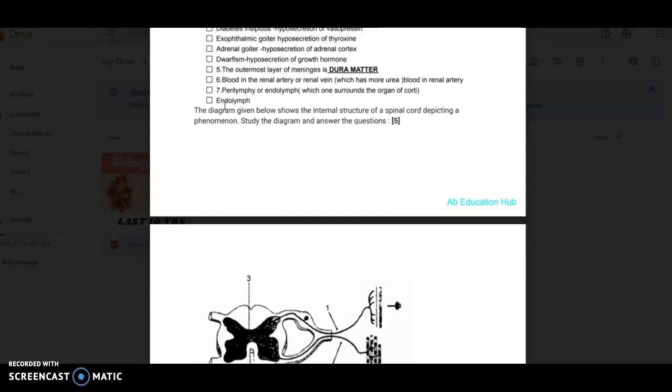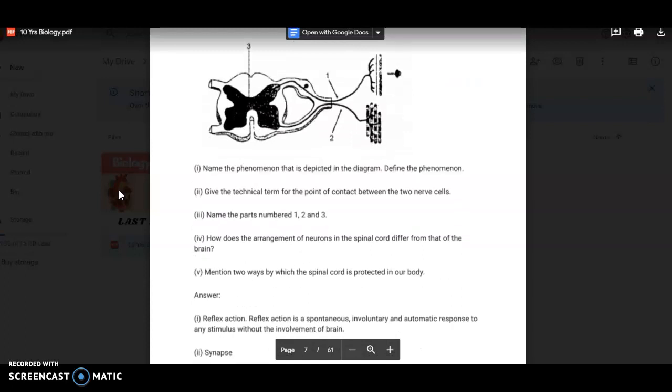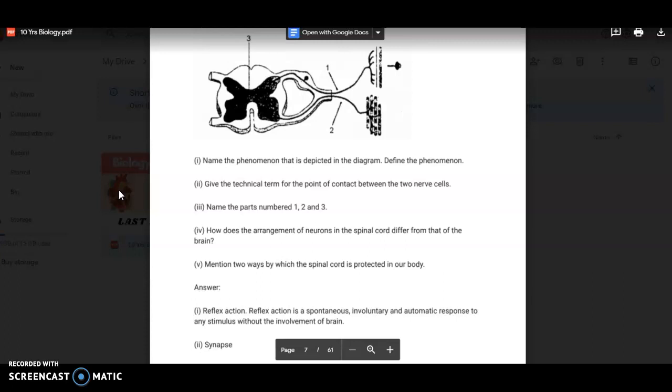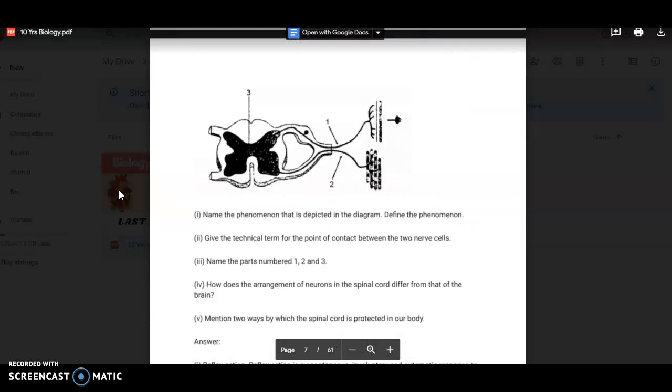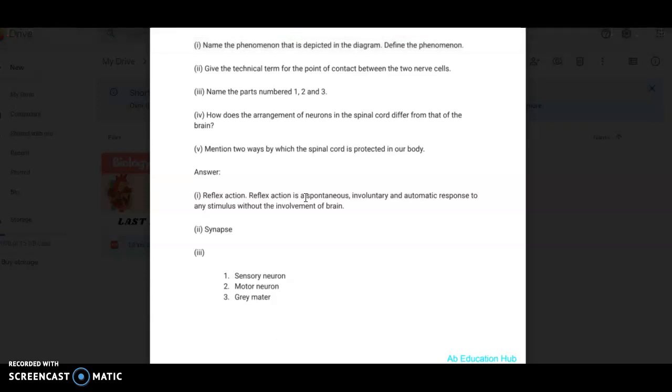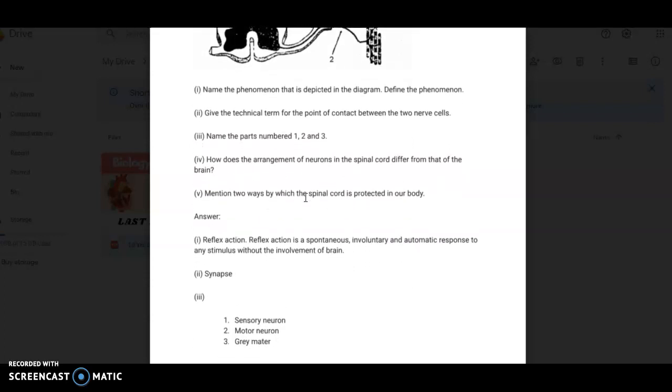Now this is a diagram based question. And it asks you the phenomenon that is depicted in the diagram. Define the phenomenon. So the answer here is reflex action. Reflex action is spontaneous, involuntary, and automatic response to any stimulus without the involvement of brain. In this process, brain is not involved. Now give the technical term for the point of contact between the two nerve cells. Neuron diagram is very important and the point of contact here is synapse. Name the parts numbered one, two, three. These are all the neurons. So answer is first sensory neuron, the second is motor neuron, and third is gray matter.